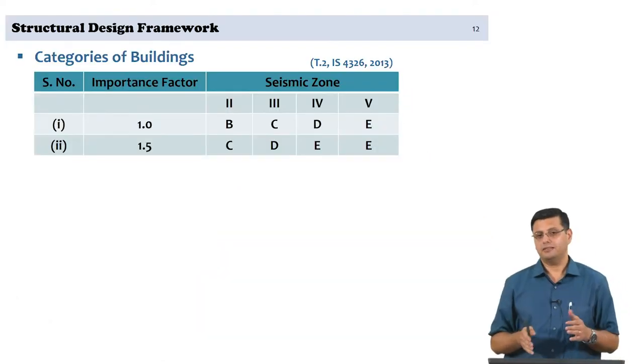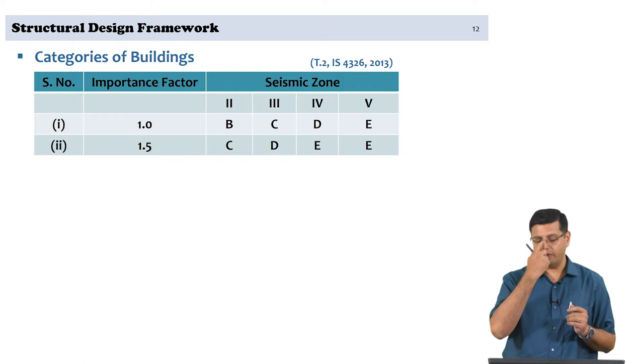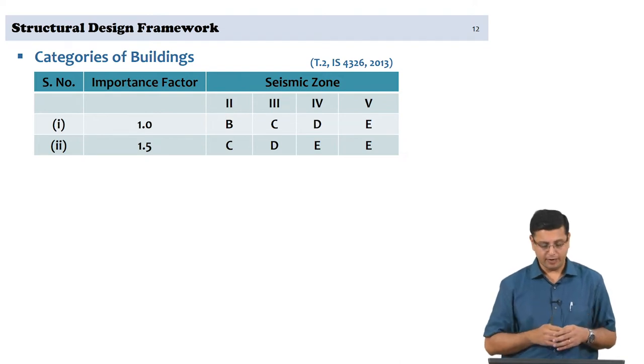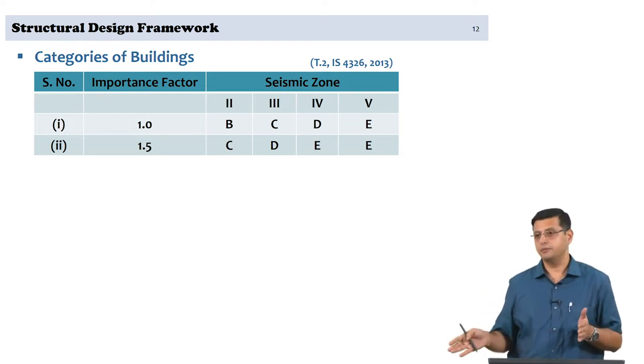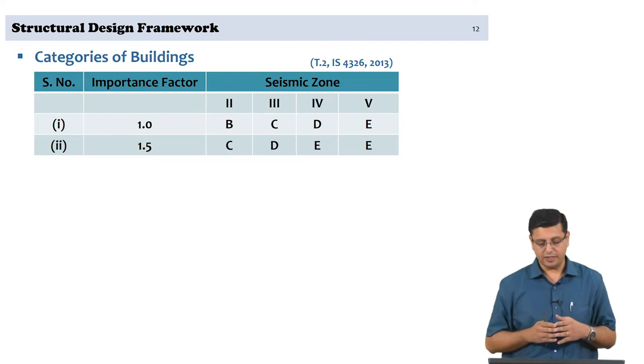We continue this afternoon our lecture on design, examining design with respect to the code dealing with the permissible stress approach for unreinforced masonry. To sum up what we examined in the last class, in terms of the overall structural design framework, we were linking up the seismic code IS 1893 part 1, the code of practice for earthquake resistant constructions IS 4326, the national building code which has segments dealing with structural design of unreinforced masonry and the new section on reinforced masonry.